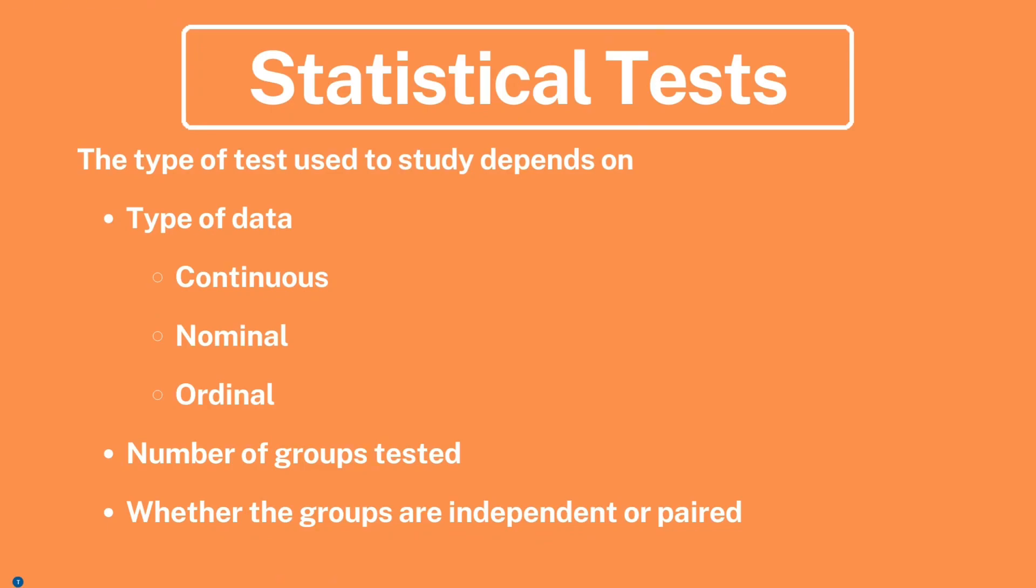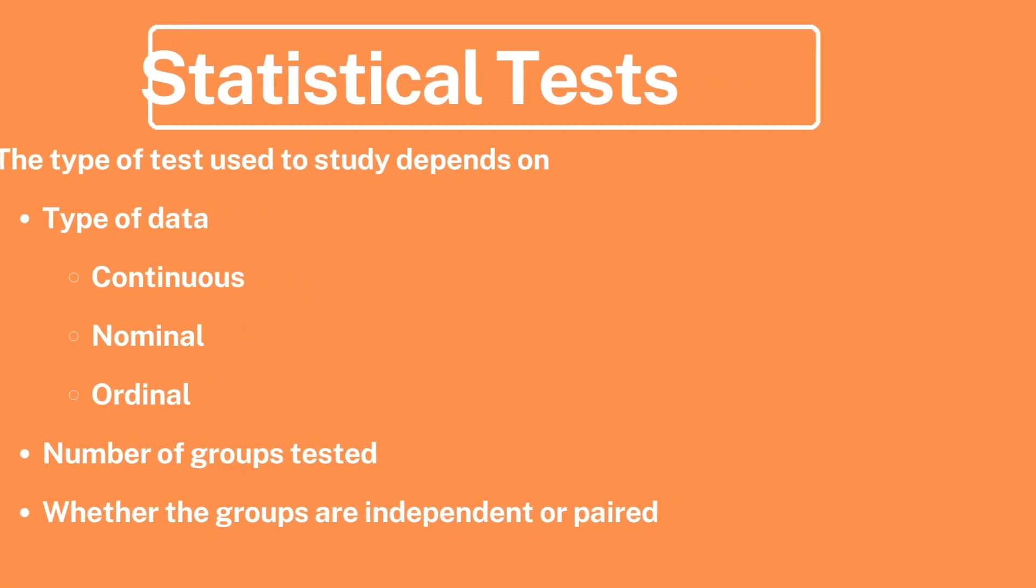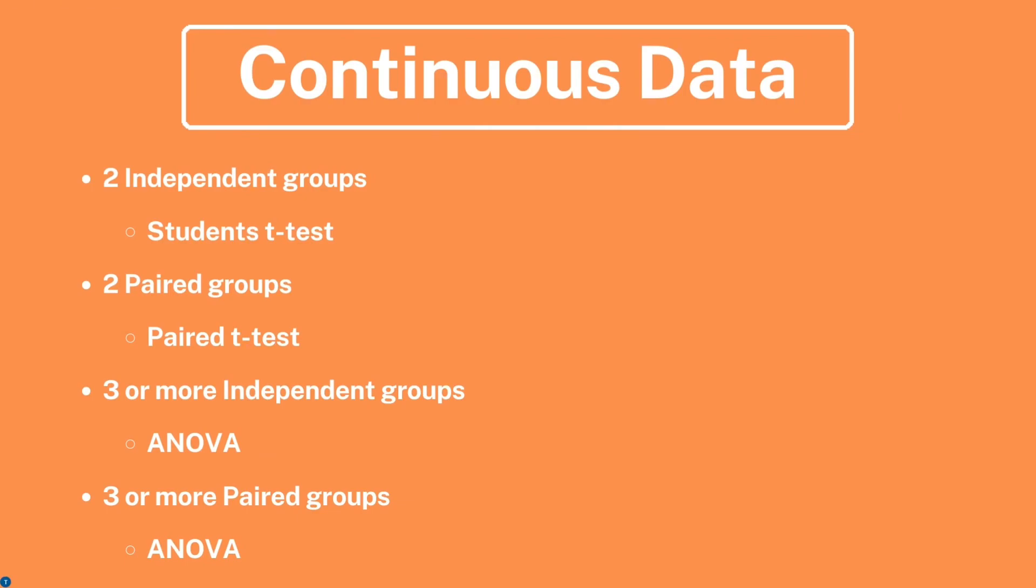On the other hand, when dealing with only two groups, t-tests or Mann-Whitney U-tests are commonly employed. Lastly, the independence or pairing of groups plays a crucial role in test selection. Independent groups are those in which observations in one group are not related to observations in another - an example of this is comparing the test scores of two different classes. Paired groups involve related observations, like before and after measurements in the same individuals. So now we'll be seeing which type of test to use when.